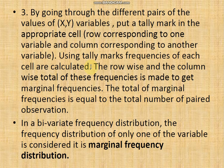Using the tally marks, the frequencies of each cell are calculated. The row-wise totals and column-wise totals of these frequencies give the marginal frequencies. The row-wise total gives the frequencies of one variable x, and the column-wise total gives the frequency of another variable y.